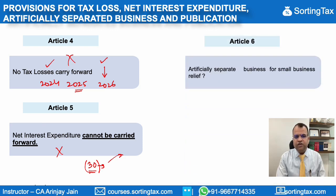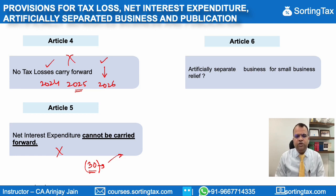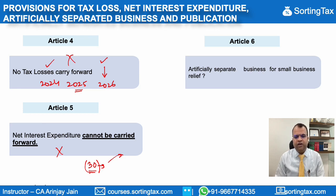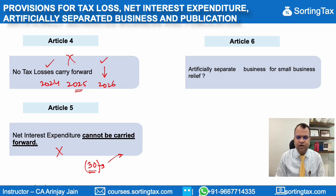If you artificially separate your business to claim small business relief, then this exemption will not be available, because it will be considered a corporate tax advantage and general anti-avoidance regulations will be applicable. You would need to demonstrate a valid commercial reason for the separation. If it is being done purely to obtain a tax advantage, the exemption will not be available.